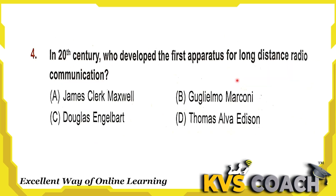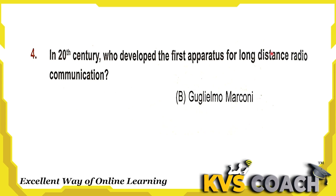Next question: in the 20th century, who developed the first apparatus for long-distance radio communication? Option A is James Clark Maxwell — he developed the theory of electromagnetic radiations. Option B is Guglielmo Marconi — he discovered radio waves and long-distance radio communication. Option C is Douglas Engelbart — he has the patent for the computer mouse. Option D is Thomas Alva Edison — who invented the light bulb. So the right answer is Guglielmo Marconi.